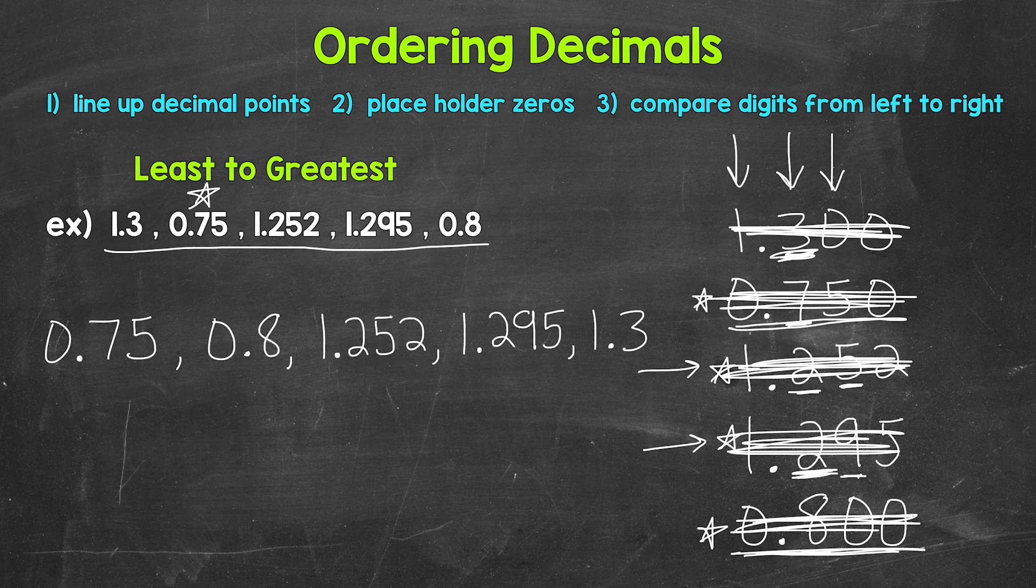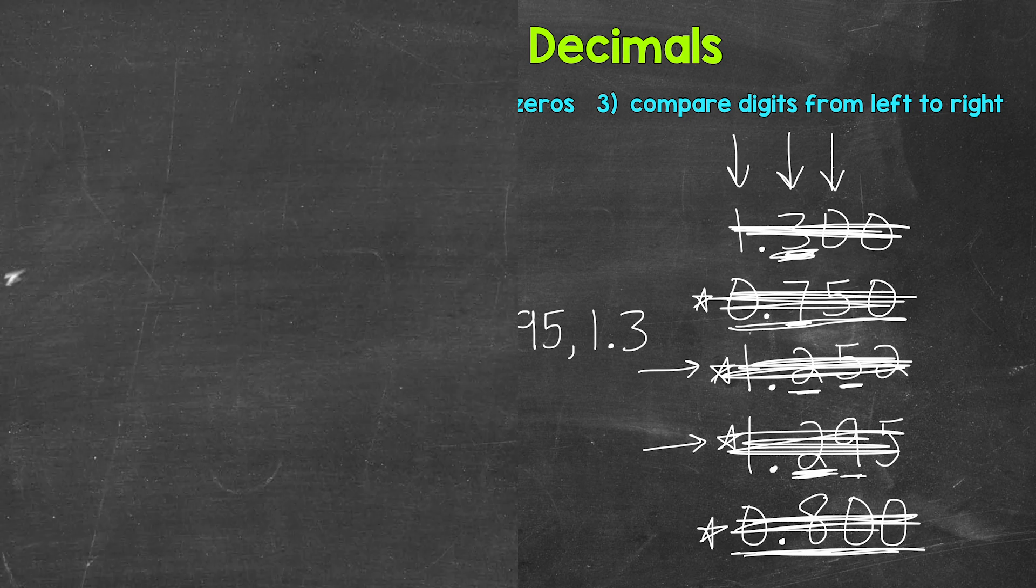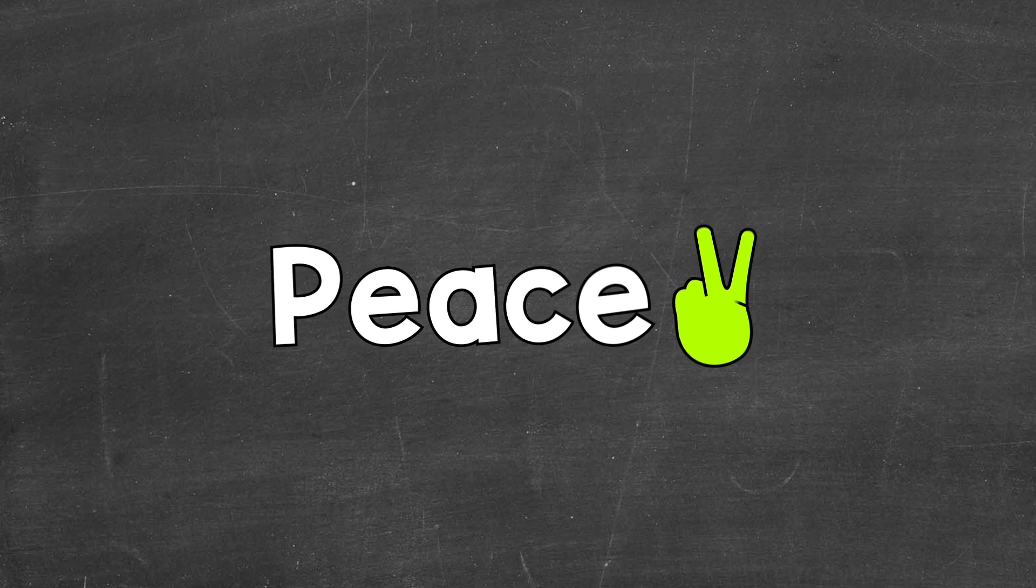Line up the decimal points. Use placeholder zeros. And then compare digits from left to right. I hope that helped. Thanks so much for watching. Until next time. Peace.